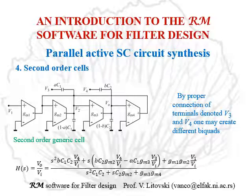Now we will go to the second-order cell, for which we will first discuss the generic solution with proper connection of nodes V3 and V4 and choice of the constants A and B. As can be seen from the transfer function at the bottom of the slide, we may produce any type of second-order function — starting with low-pass and ending with band-stop or high-pass or whatever. Even complex zeros may be produced.